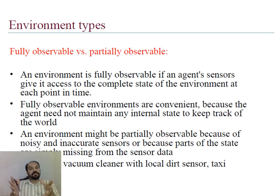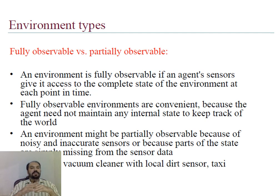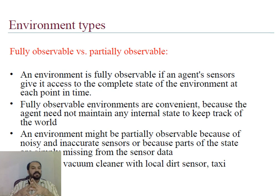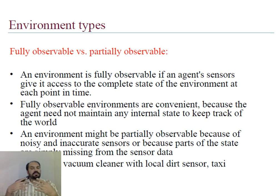First is fully observable versus partially observable environment. A fully observable environment gives the agent's sensors complete state information about the environment. When the agent has all the information required, it does not need to maintain any internal state or use any percept history or long percept records.